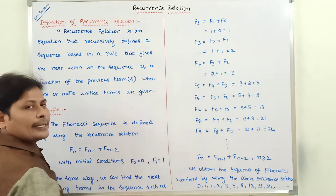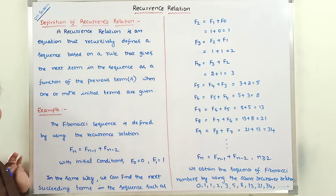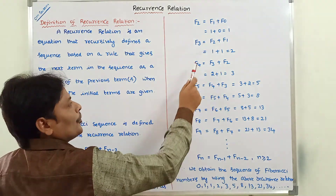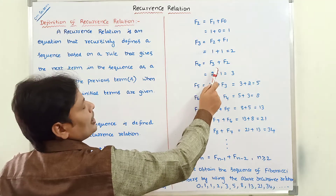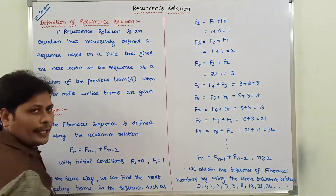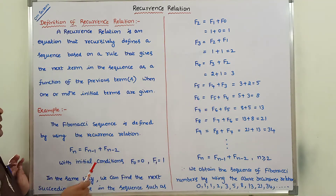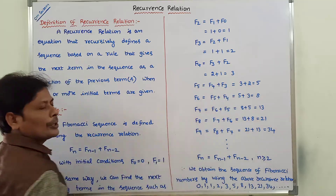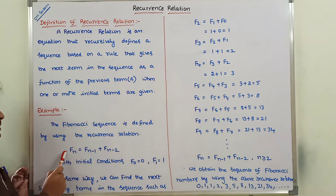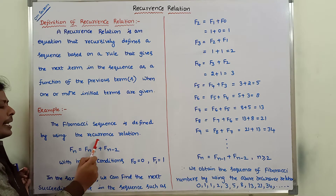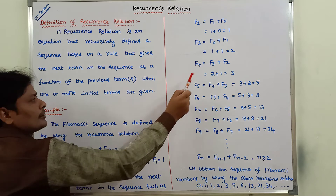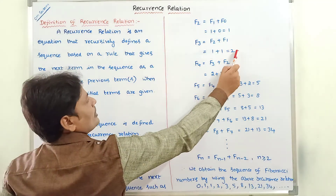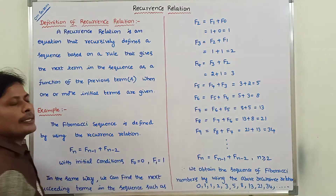The next term in the sequence is f4. f4 can be defined as a function of the two previous terms, that is f3 and f2. Substituting n=4: f4 = f(4-1) + f(4-2) = f3 + f2 = 2 + 1 = 3.